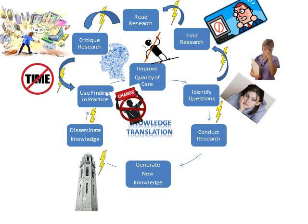Researchers can be part of the problem too. There's an old model of research called the ivory tower model, where perhaps there hasn't been the best understanding of the needs of research users by researchers, or perhaps not taking an active role in working with end users of the research. So researchers have some work to do here too. More and more of them are realizing that getting research into practice is about relationships between research producers and research users.